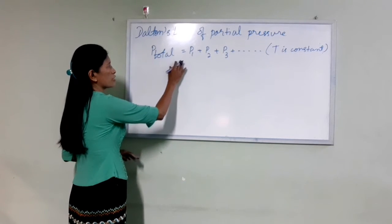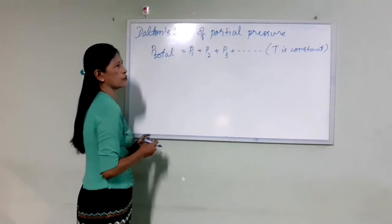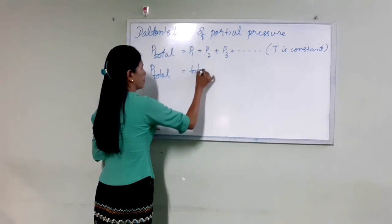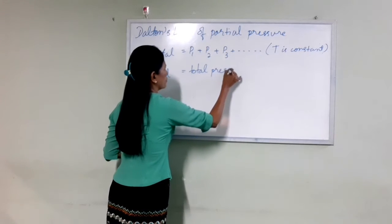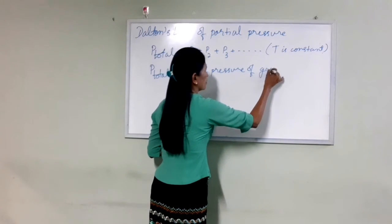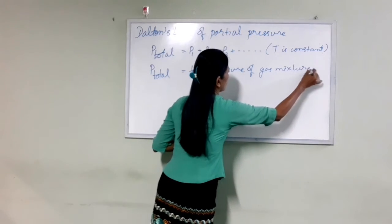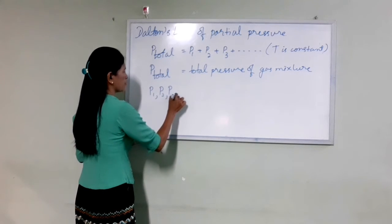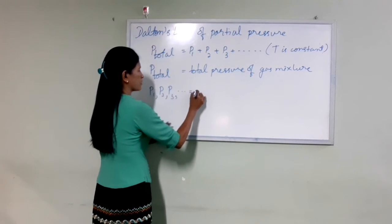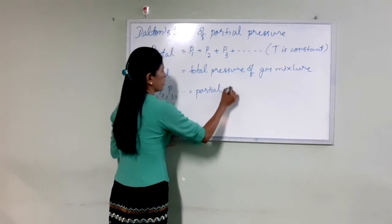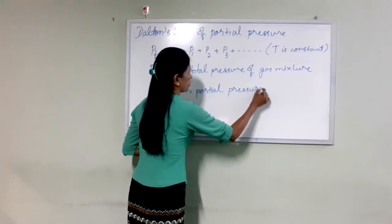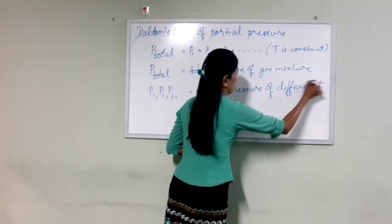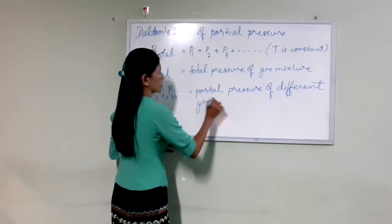P1V1 plus P2V2. Total pressure of a gas mixture equals P2 plus V3 plus P3. This is the pressure of different gases.